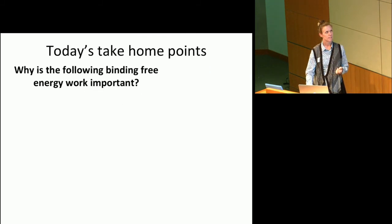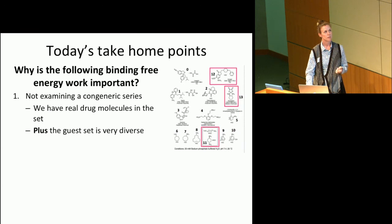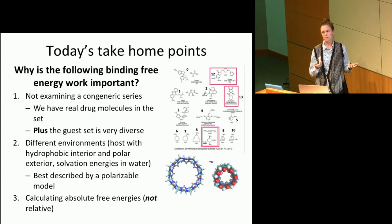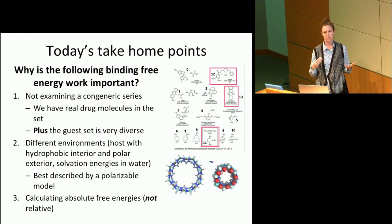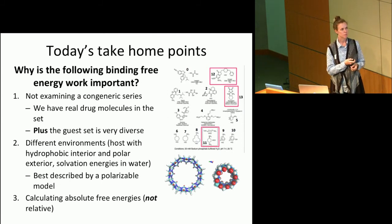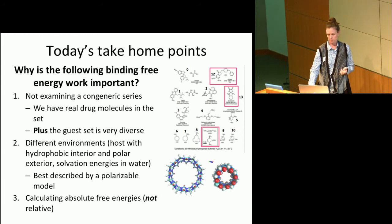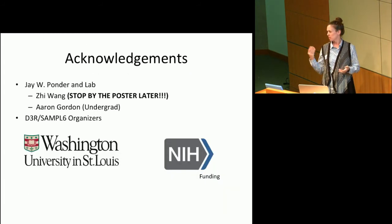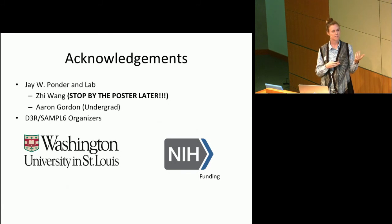In the last seconds I have: hopefully I've demonstrated that we have an accurate methodology when looking at a non-congeneric series, being able to accurately predict interactions involving drug molecules, make accurate predictions with different environments within the host-guest system, and accurately calculate absolute binding free energies as opposed to relative free energies. I'd like to thank my PI Jay Ponder. We also have results from SAMPL5 for predicting binding free energies and will have a poster later. Thank you for your time.